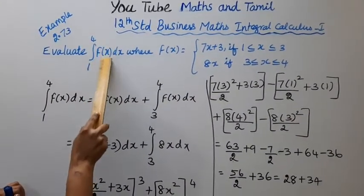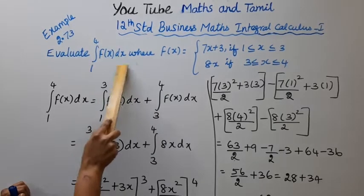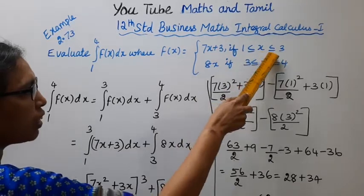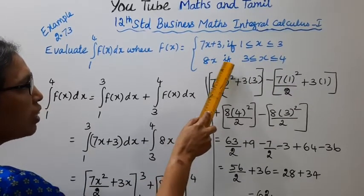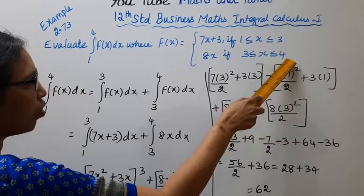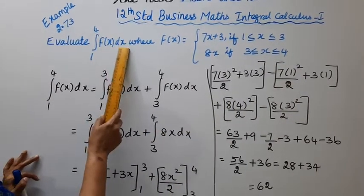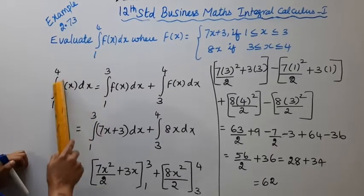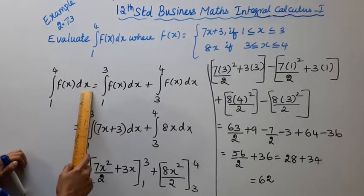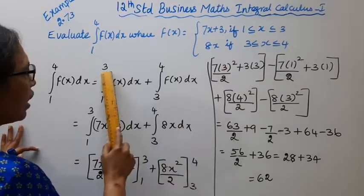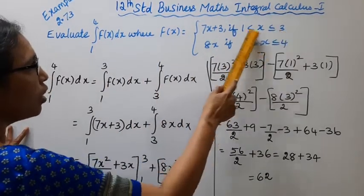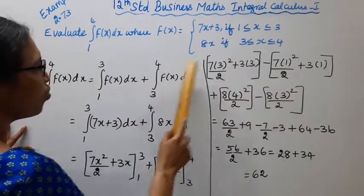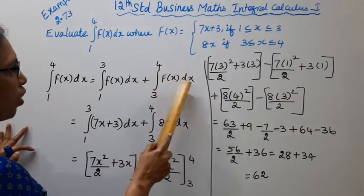Evaluate the integration from 1 to 4 of f(x) dx, where f(x) equals 7x plus 3 if 1 ≤ x ≤ 3, and 8x if 3 ≤ x ≤ 4. To evaluate this, we split it as integration from 1 to 3 of f(x) dx plus integration from 3 to 4 of f(x) dx.